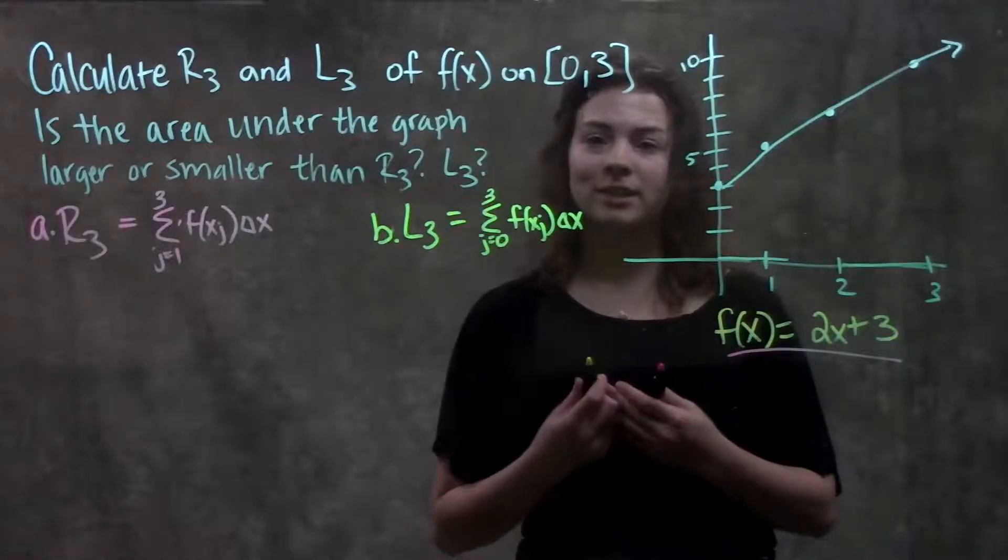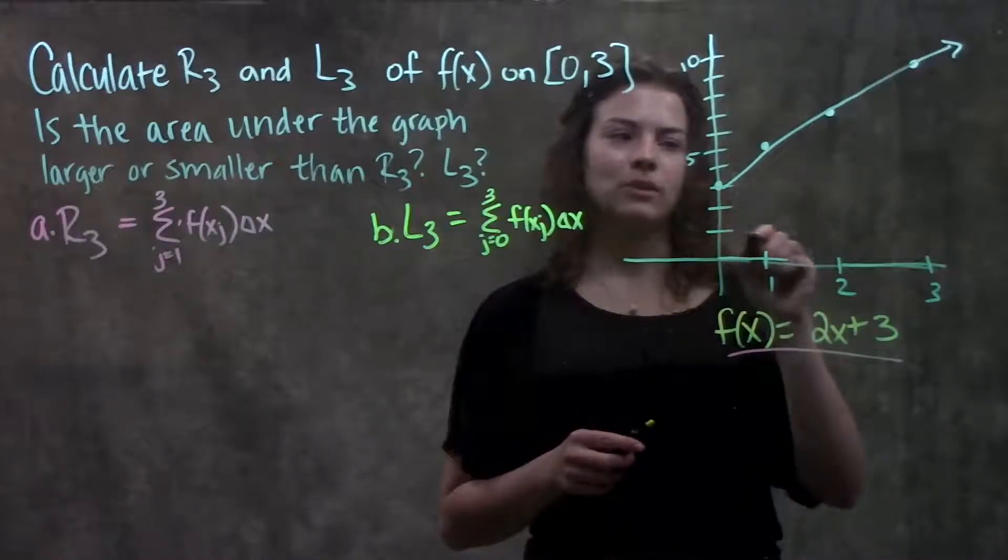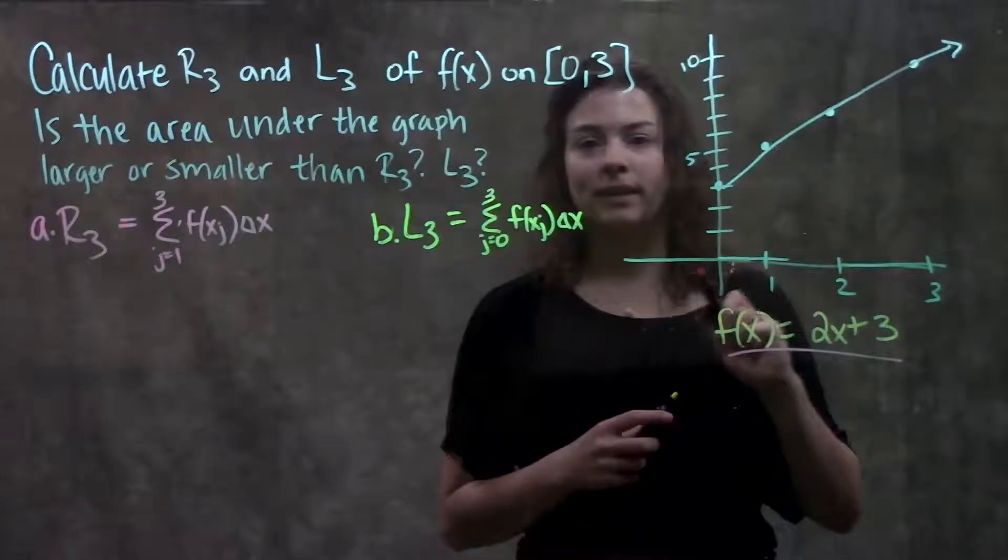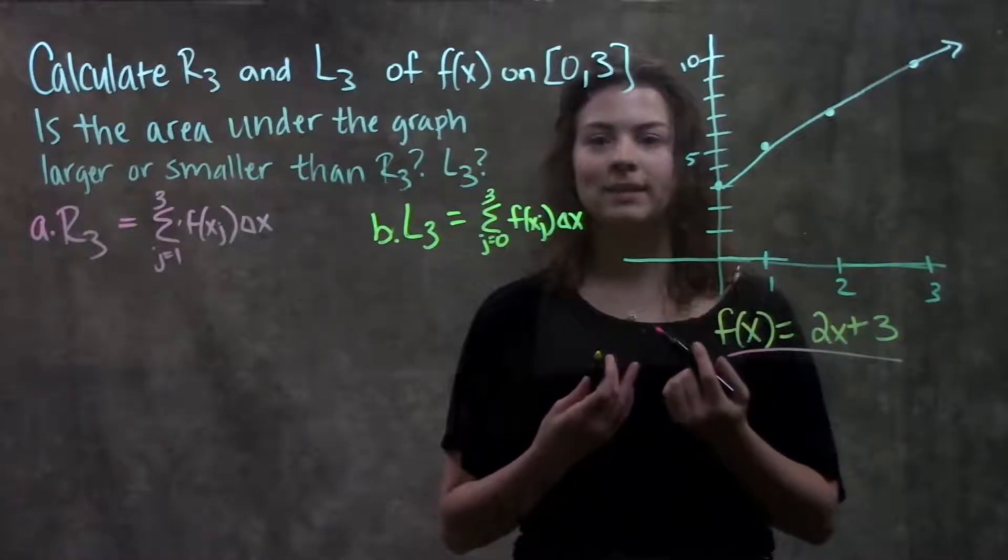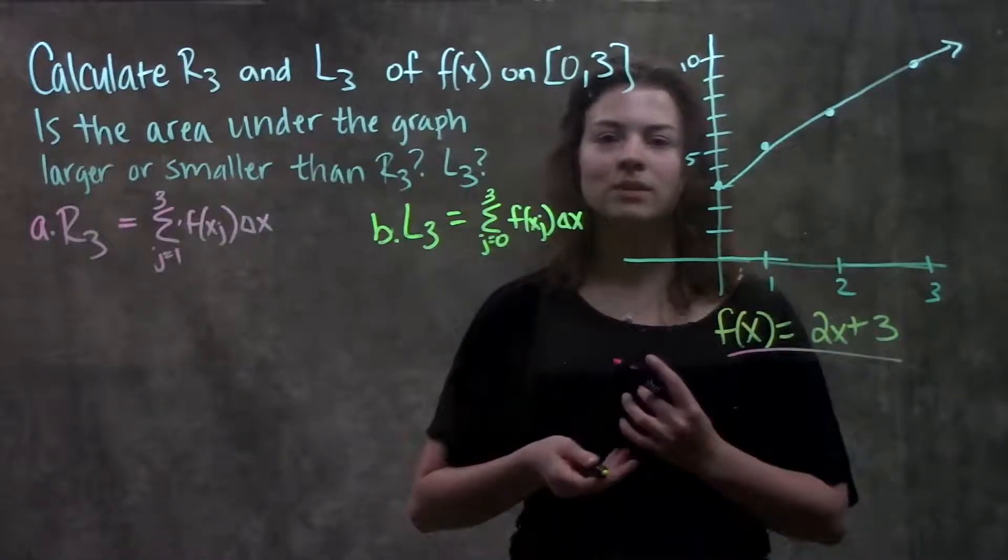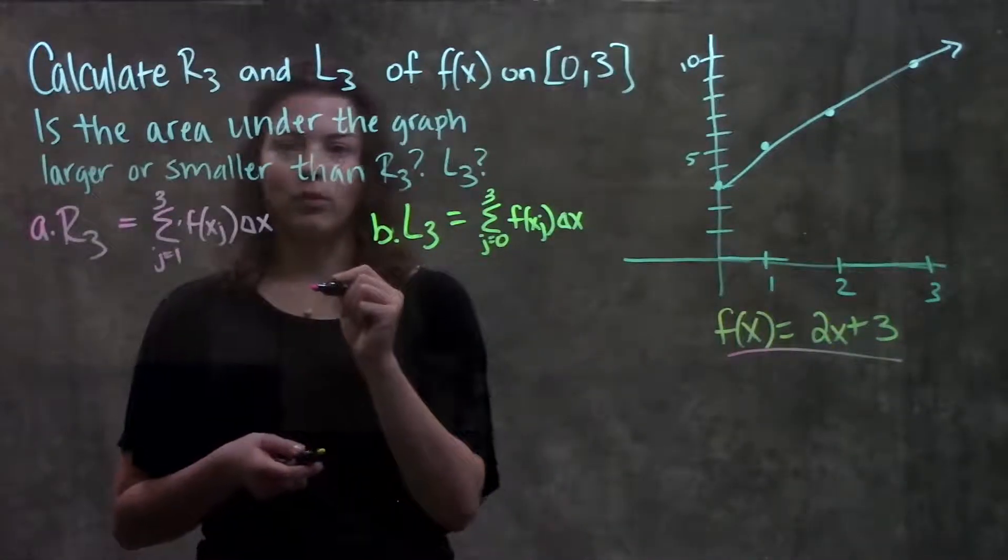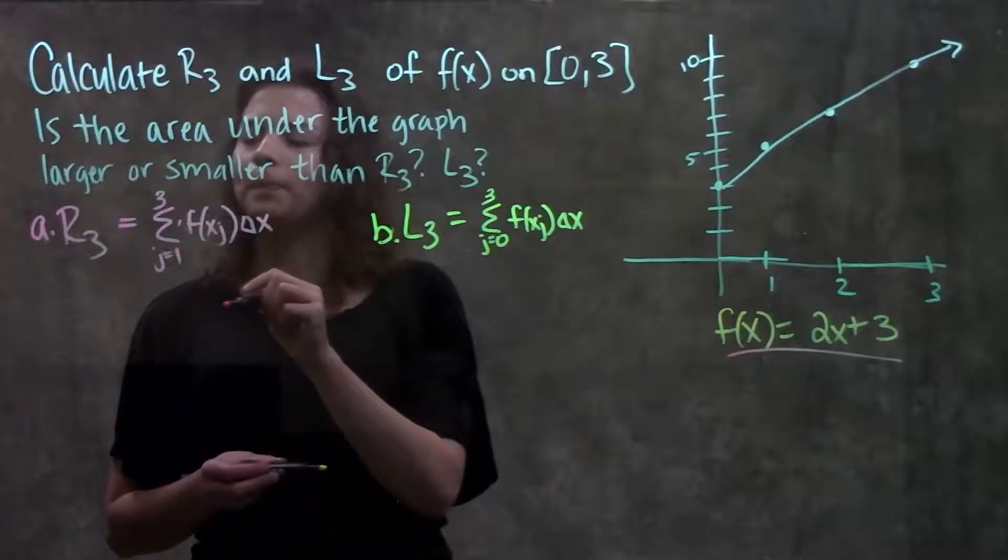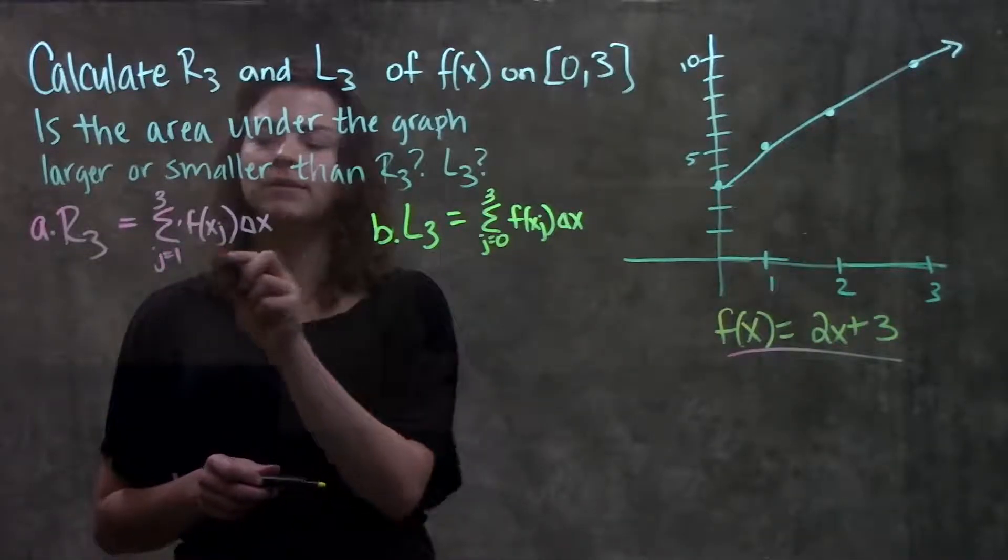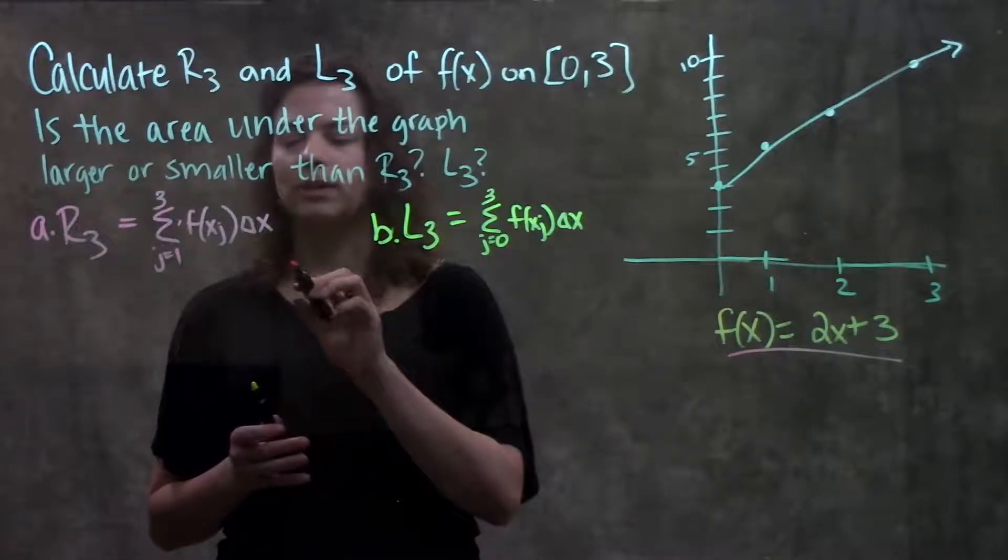If you remember in this section, we learned how to approximate area under a graph by drawing rectangles over our function, calculating the area of each rectangle, adding it together, and using that as our estimate. So let's work through this problem. The first part we're going to do is calculating R3, or the right endpoints of our rectangles. They gave us this formula for calculating R3, so let's go through what each part means.